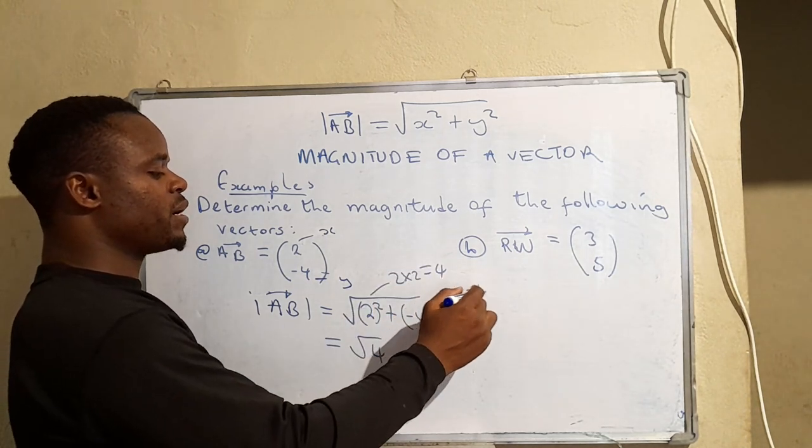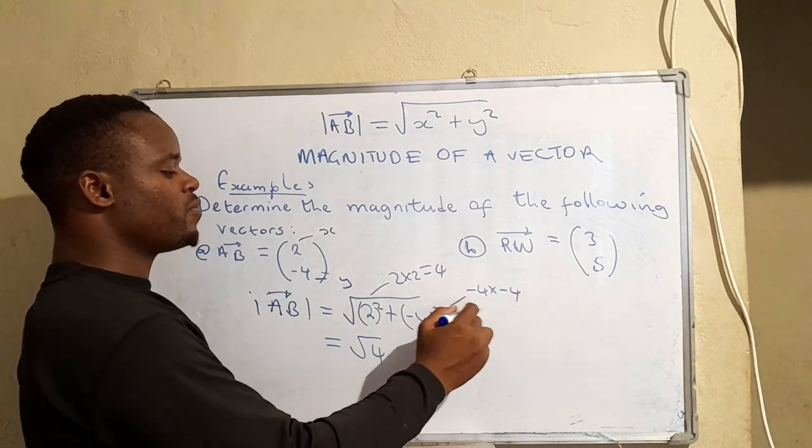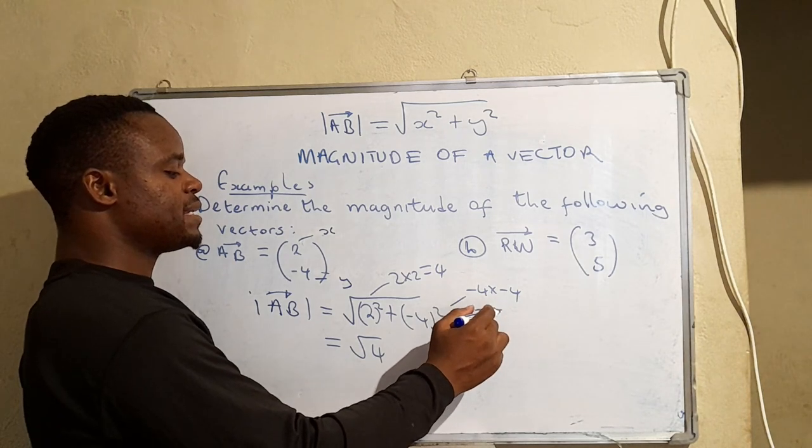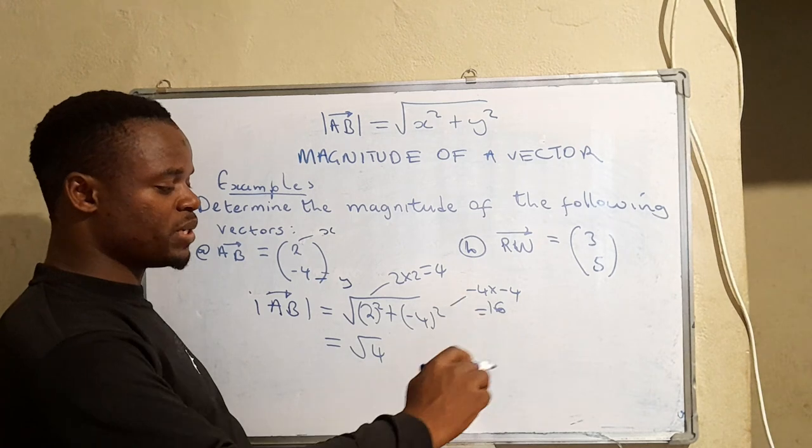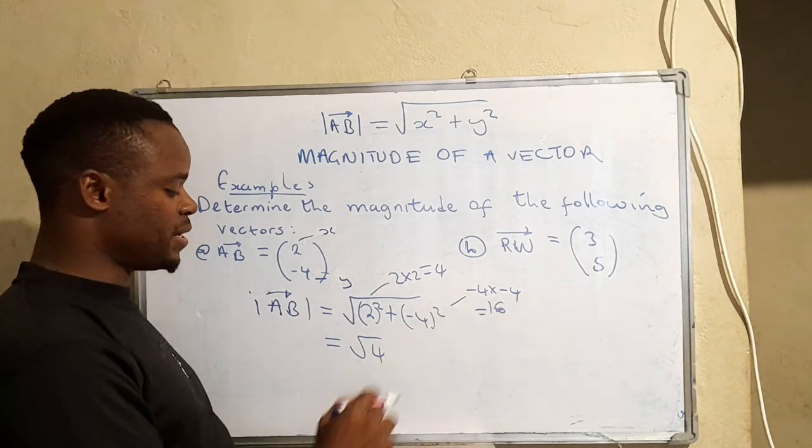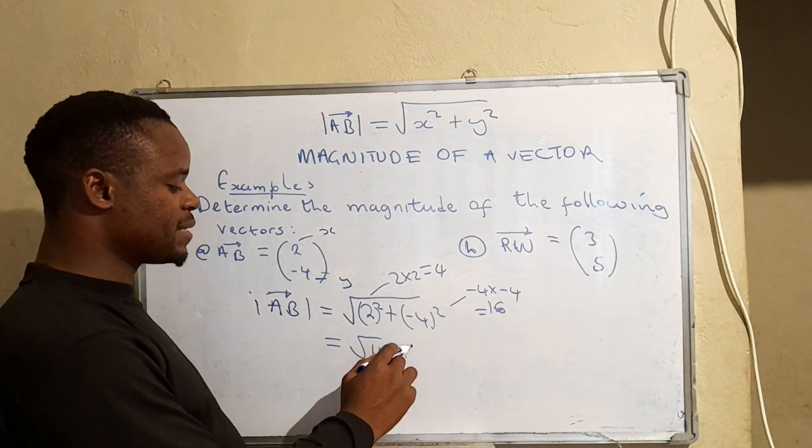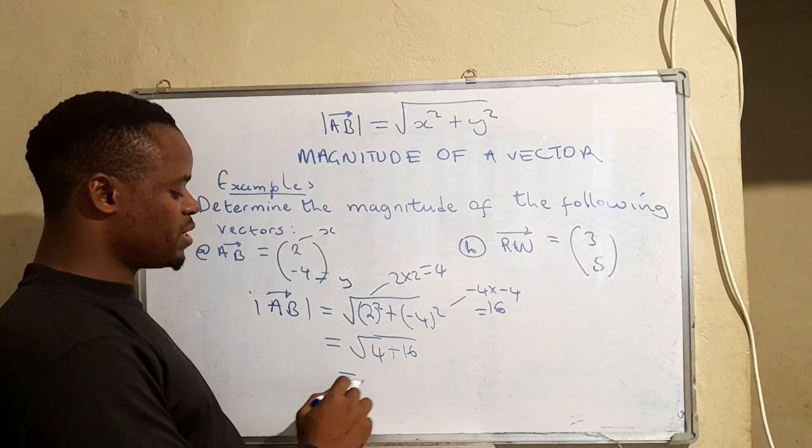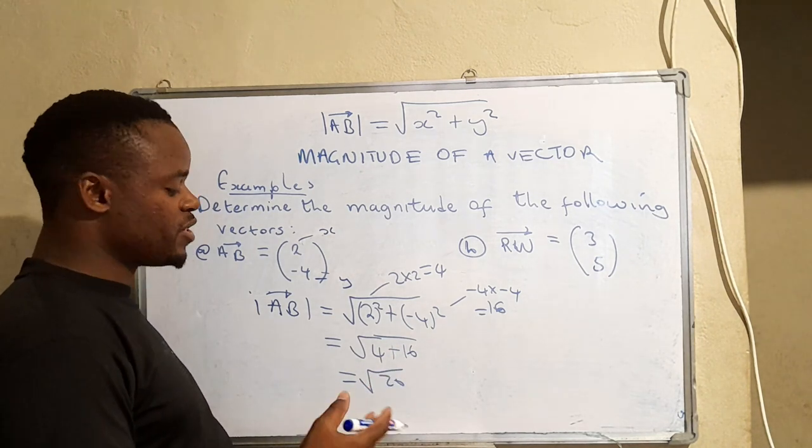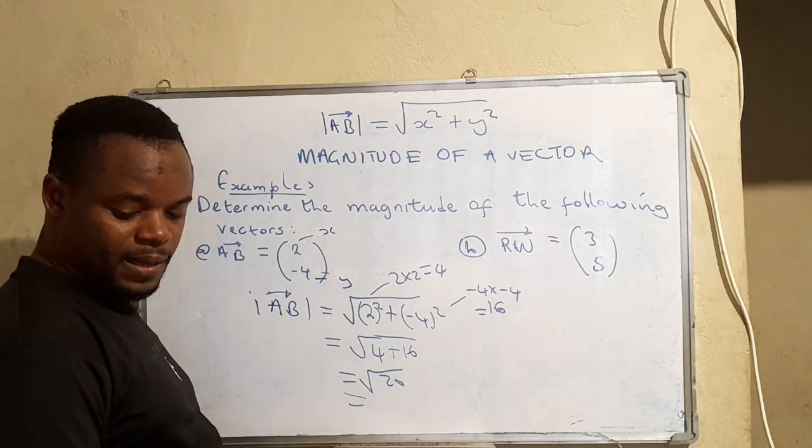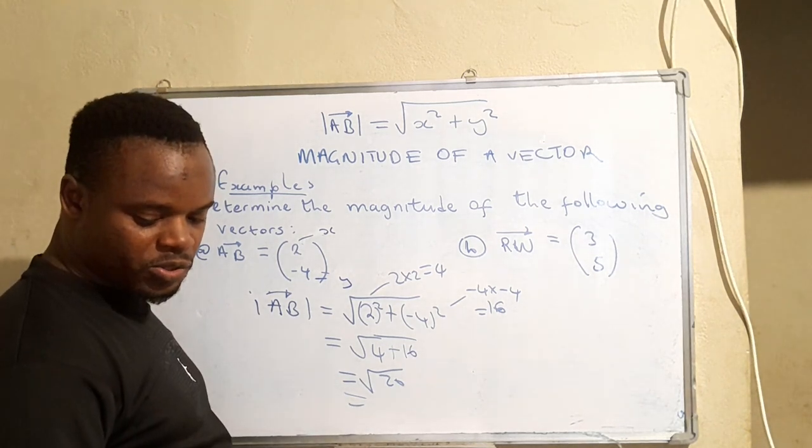So that would be 4 plus 16 which gives us 20. Now when we find the square root of 20, what is it that we are going to have?